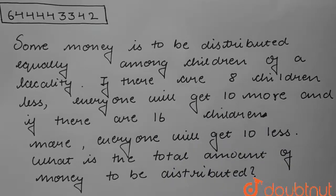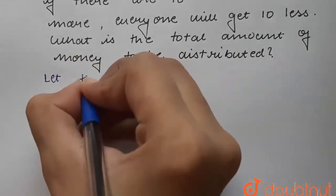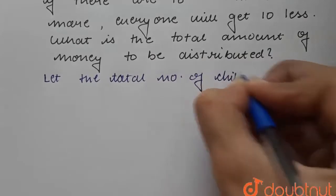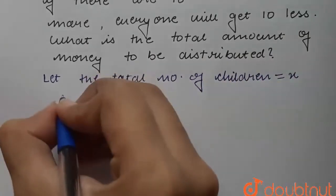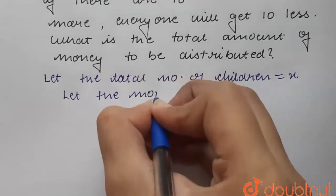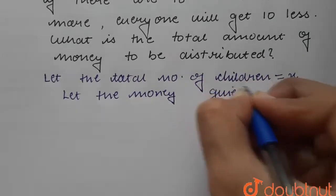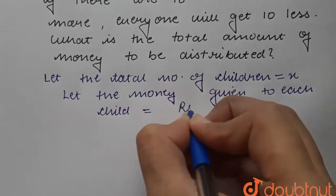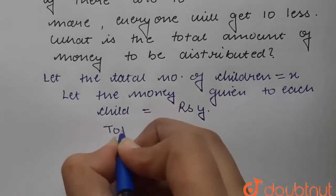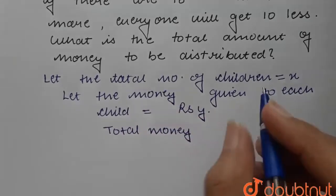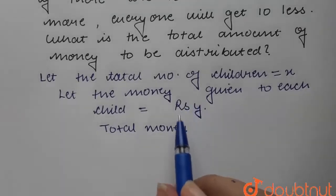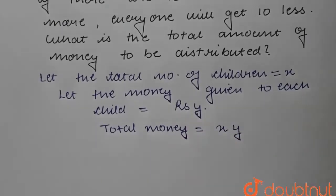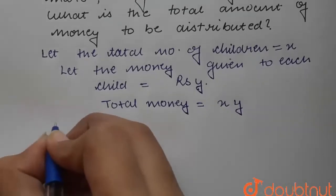Let the total number of children be x, and let the money given to each child be rupees y. So the total money would be x into y, since x children each get y rupees.